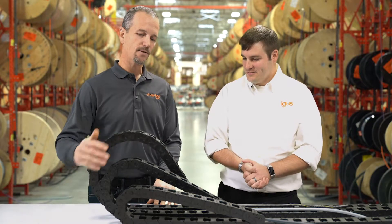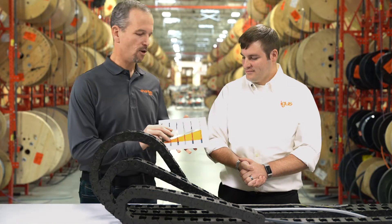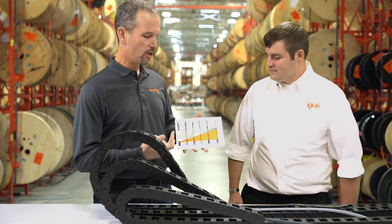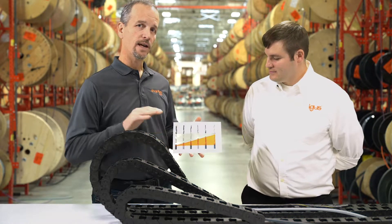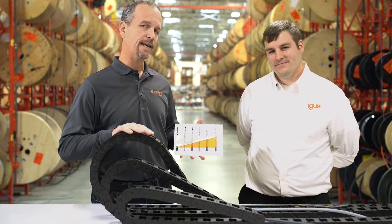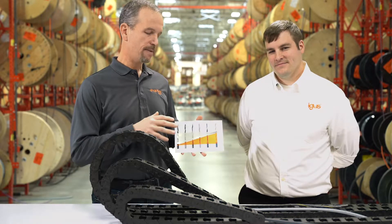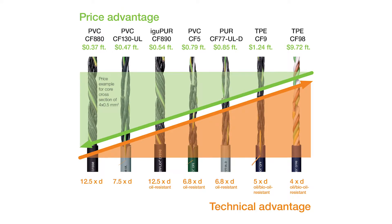Today we have a couple of examples to illustrate this. We have a graph that shows, for the same cable — today we're using a 12 conductor 18 gauge cable — seven different performance levels of cable for that same electrical function. You can see in this price advantage example that the most economical option requires a 12 and a half times diameter bend radius. You then work your way through the different mechanically functioning cable types to a cable you can install down to four times the diameter bend radius.